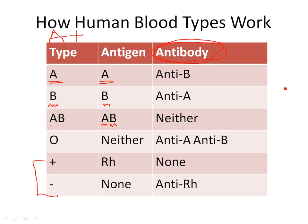To recap: your blood type reflects the antigens you have. Anything you don't have is considered foreign, and you make antibodies against it. Anyone whose blood type is A will make antibodies against B because they don't have it. Anyone whose blood type is B makes antibodies against A.